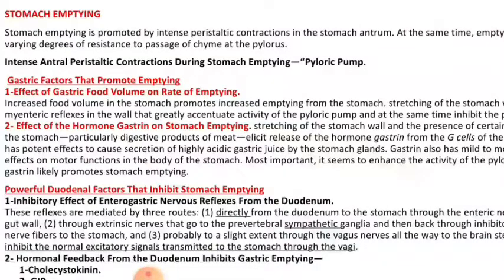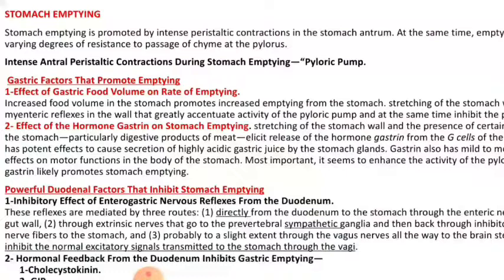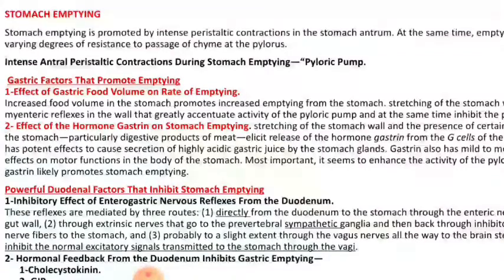The duodenal factor inhibits stomach emptying. When food passes from the stomach to the duodenum, it causes an inhibitory reflex from the duodenum back to the stomach, called the inhibitory enterogastric reflex. This can occur directly from the duodenum to the stomach, or through the extrinsic nervous system via sympathetic stimulation, or through the vagus nerve — carrying signals to the brain stem, which then causes inhibition of the excitatory signals going to the stomach.